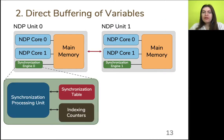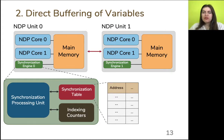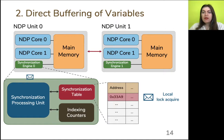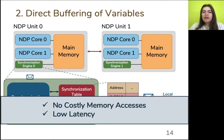Second, we add a specialized cache structure, the synchronization table, inside each synchronization engine to keep synchronization information. When a synchronization engine receives a request from an NDP core for a synchronization variable, the synchronization processing unit directly buffers the request in the synchronization table, keeping all the information needed locally. With the direct buffering technique, we avoid costly memory accesses for synchronization and minimize latency overheads.